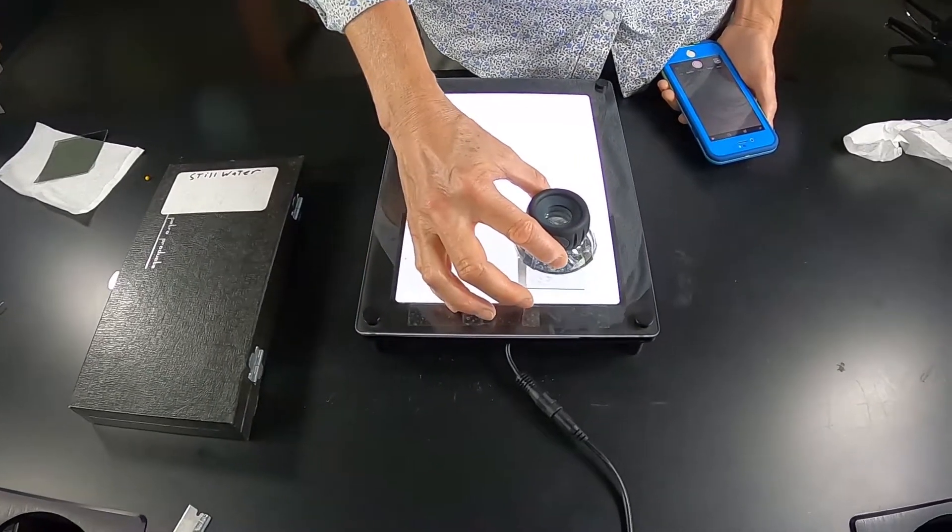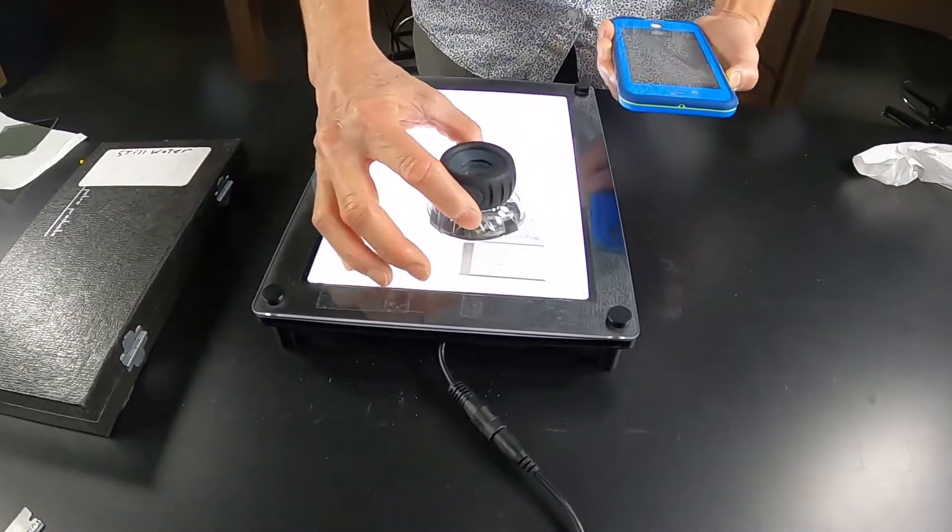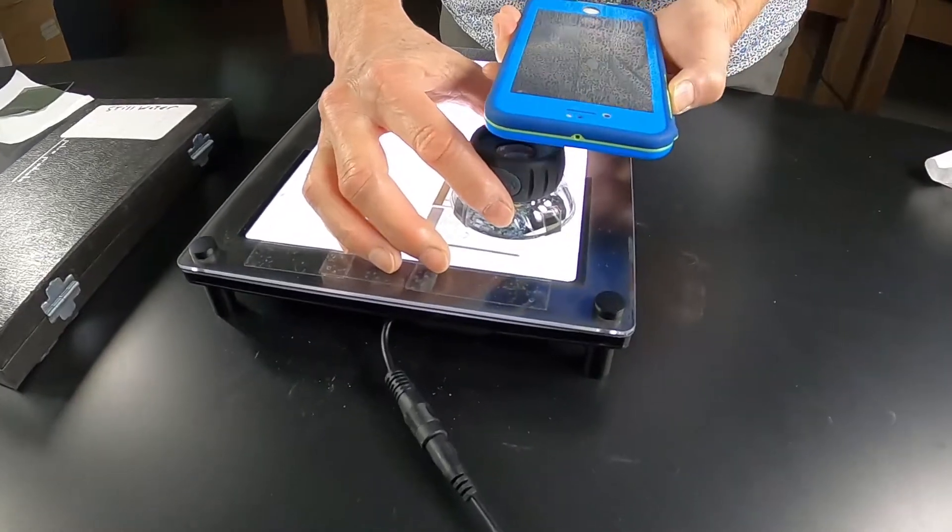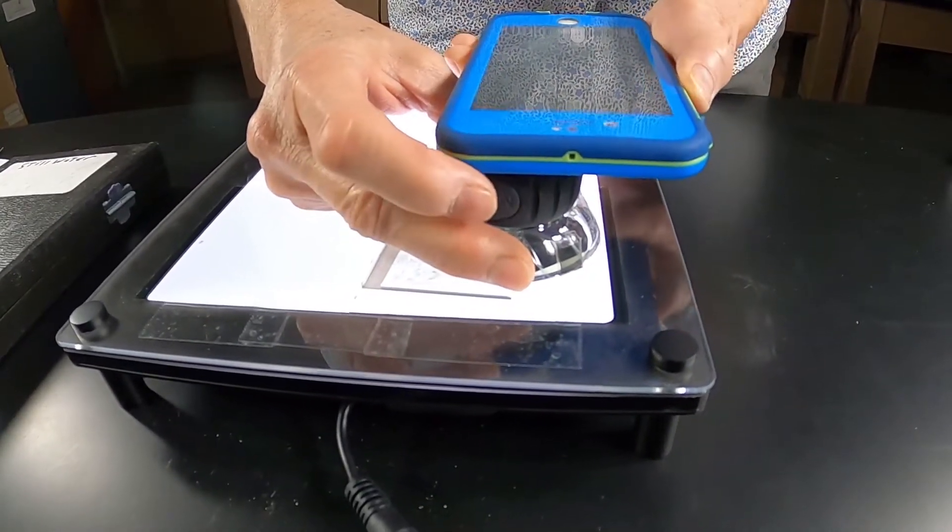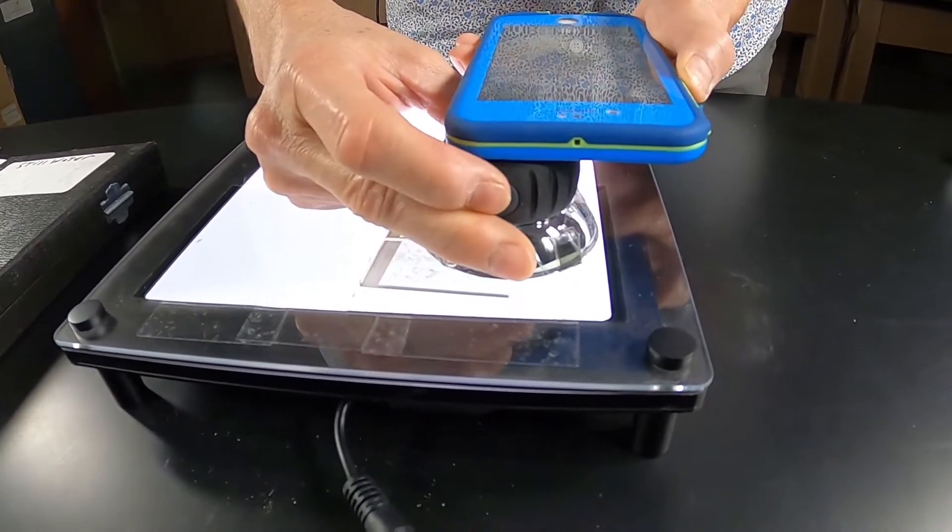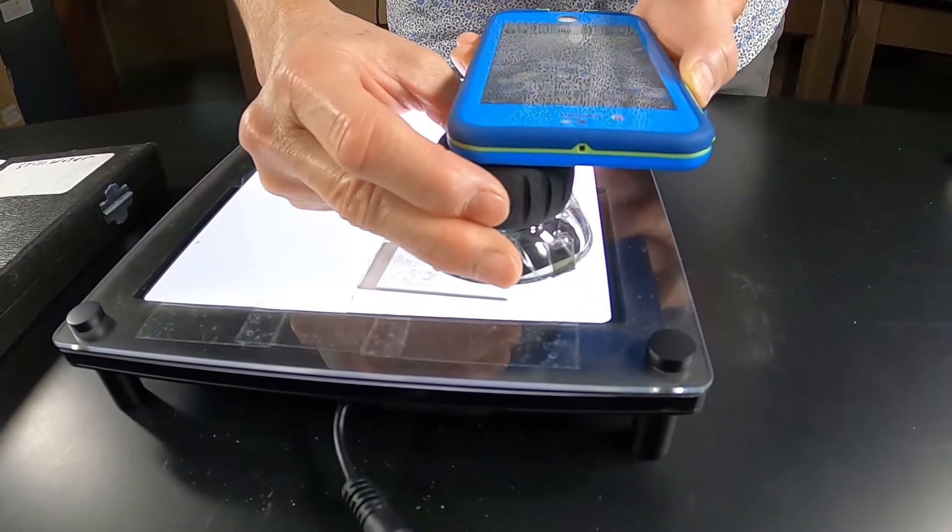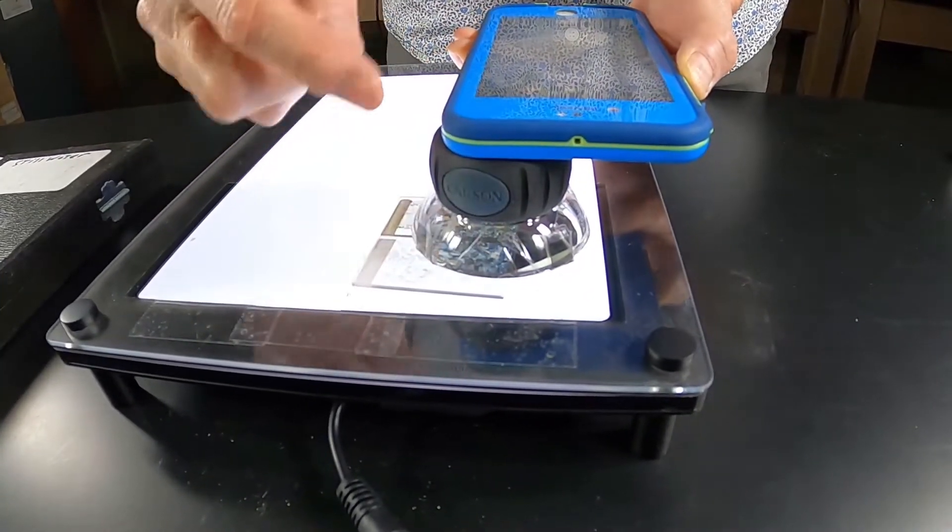I'm moving the loop directly over my sample and I'm going to show you an image. And I find that sometimes I have to do a little focusing. So once you've got your loop in focus, you might tape it down.